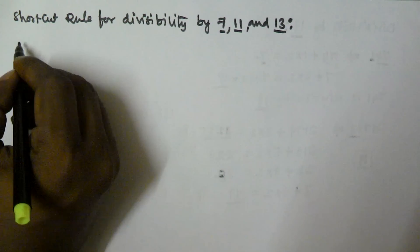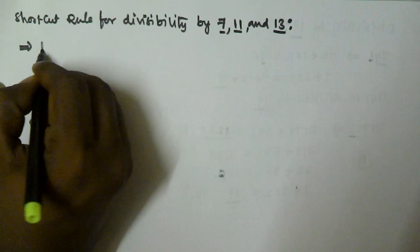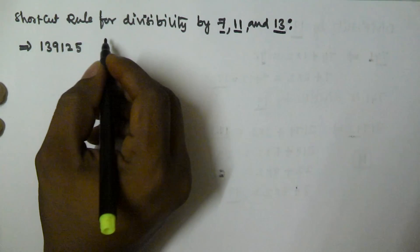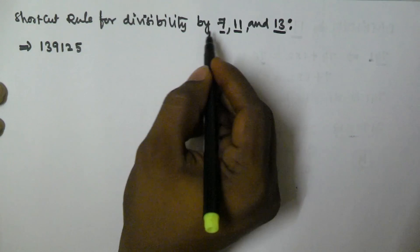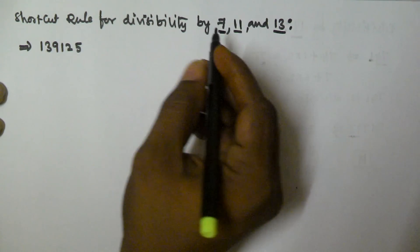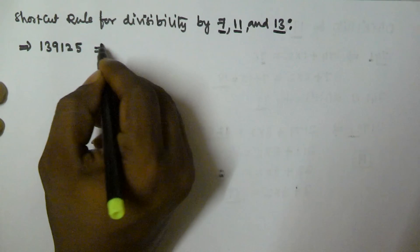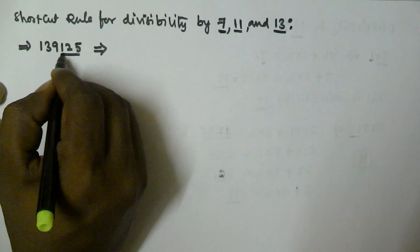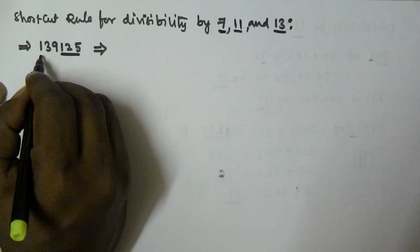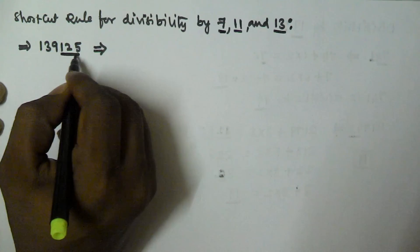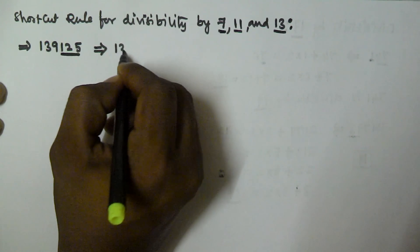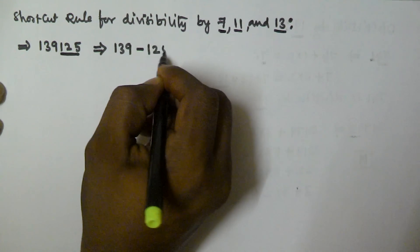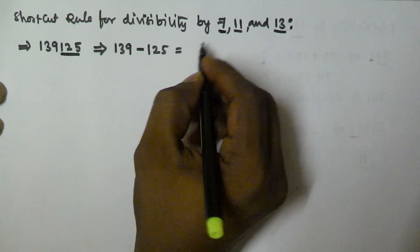Let's take a number 139125. We have to find if this number is divisible by 7 or not. The shortcut is like this: you take all the digits except the last three digits — that is 139 — and then subtract the last three digits, that is 125. So we get 14.